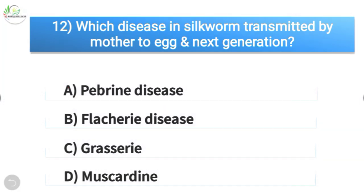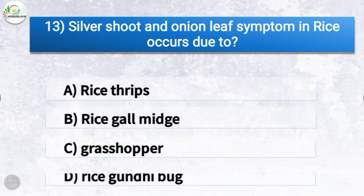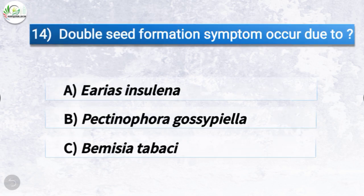Question number thirteen: silver shoot and onion leaf symptom in rice occurs due to which pest? The options are rice thrips, rice gall midge, grasshopper, or rice gandhi bug. The correct answer is option B, rice gall midge. So silver shoot and onion leaf symptom occurs due to rice gall midge.